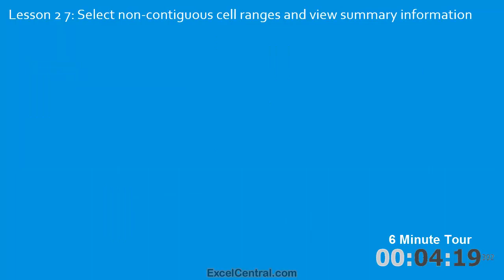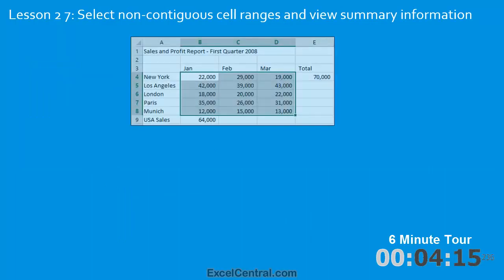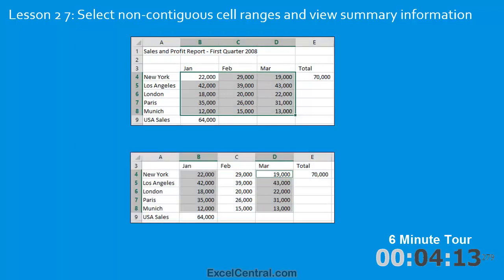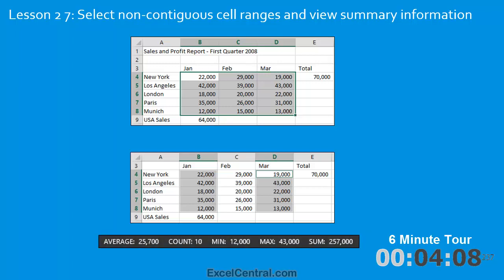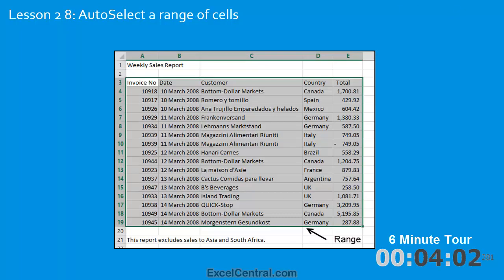In the seventh lesson you'll select non-contiguous cell ranges. This is a contiguous cell range and this is a non-contiguous cell range. Then you'll discover how to quickly view the average, count, minimum, maximum, and sum of all of the selected cells.